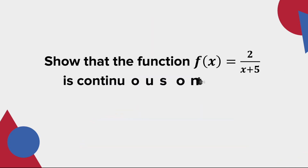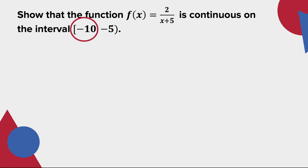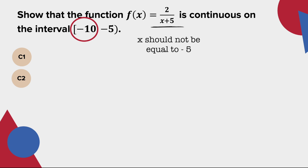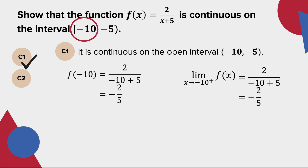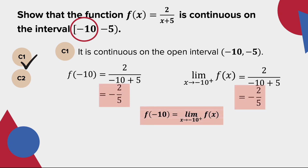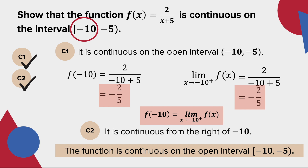Show that the function f(x) = 2/(x+5) is continuous on the interval [-10, -5]. Since the interval is only closed at -10, we check the first two conditions. For the first condition, since it is a rational function, it is only defined if x+5 ≠ 0; therefore it is continuous on the open interval (-10, -5). For the second condition, the value of the function at x = -10 is -2/5, and the limit as x approaches -10 from the right is also -2/5. Since these are equal, the function is continuous from the right of -10. Since both conditions are satisfied, the function is continuous on the interval [-10, -5].